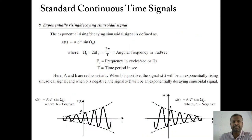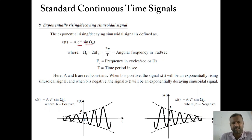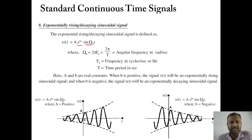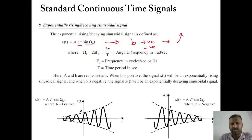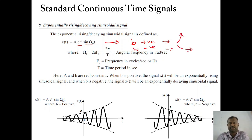Then there is the exponentially rising or decaying sinusoidal signal. The multiplication of a sinusoidal signal with an exponential gives us an exponentially rising or exponentially decaying sinusoidal signal. This rising or decaying behavior varies with respect to the value of b — if b is positive we get a rising sinusoidal signal, and if b is negative we have a decaying exponential sinusoidal signal.